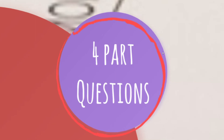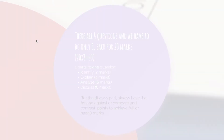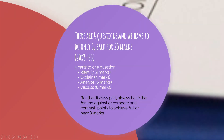For the four-part questions, there are four questions and we have to do only three, each for 20 marks — so 20 times 3 equals 60. There are four parts to one question: identify for 2 marks, explain for 4 marks, analyze for 6 marks, and discuss for 8 marks — giving 2 + 4 + 6 + 8 = 20 marks.